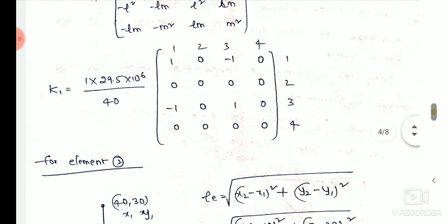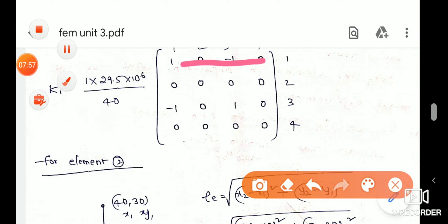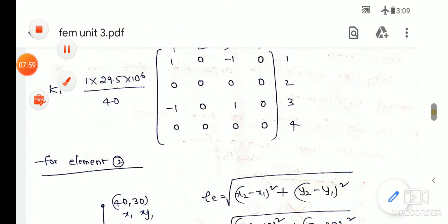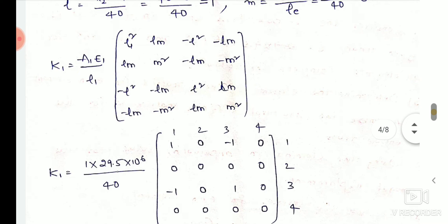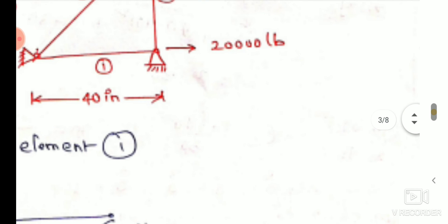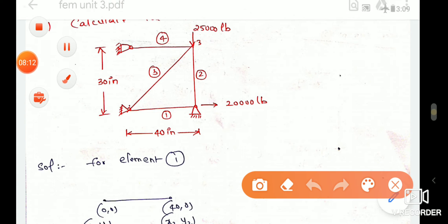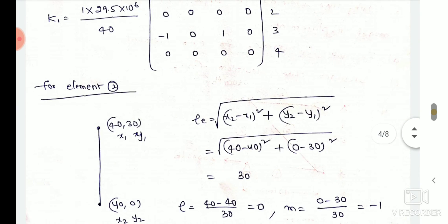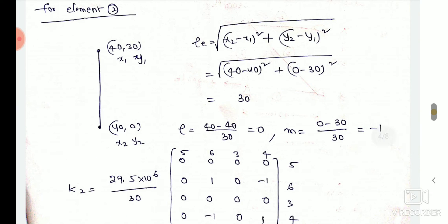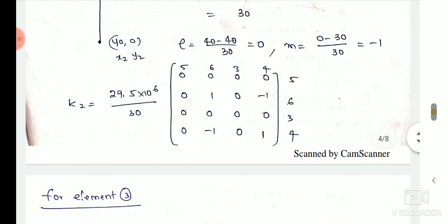The node representation is done as 1, 2, 3, 4 — so nodes are labeled 1 through 4. This node representation must be kept clearly so that when we assemble the global stiffness matrix, there is no confusion. Similarly, for the first element we find its stiffness matrix, then for the second element we note its coordinates, find its length L, find l and m, and find its stiffness matrix number two.